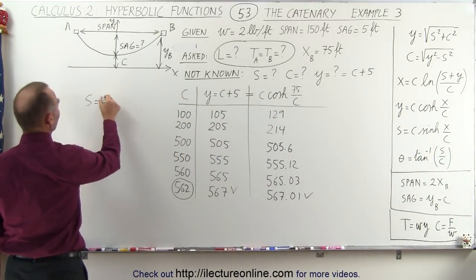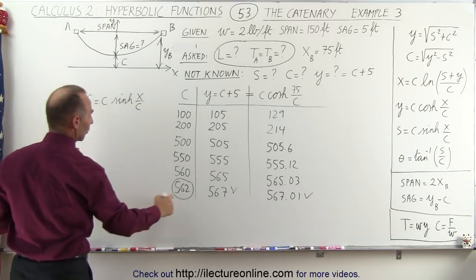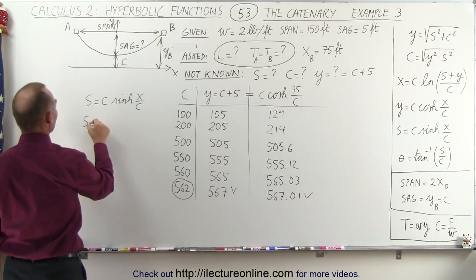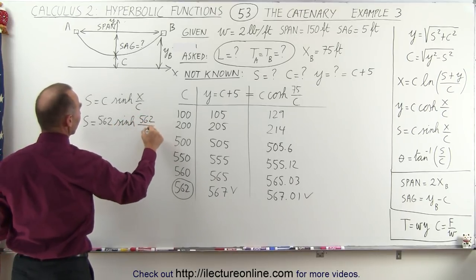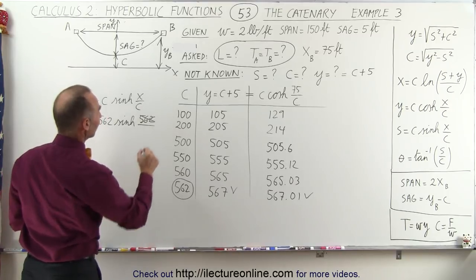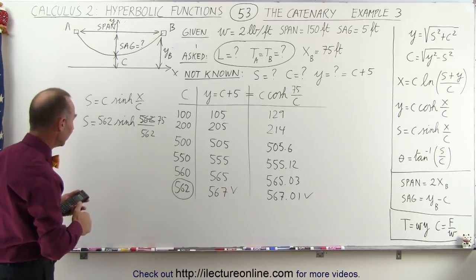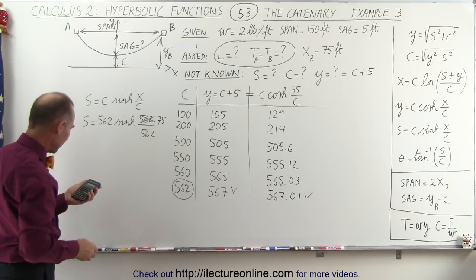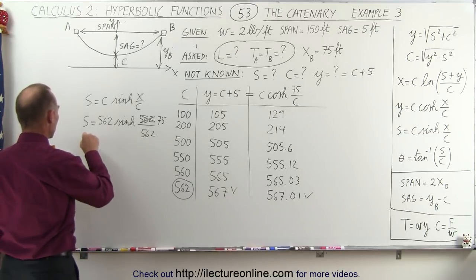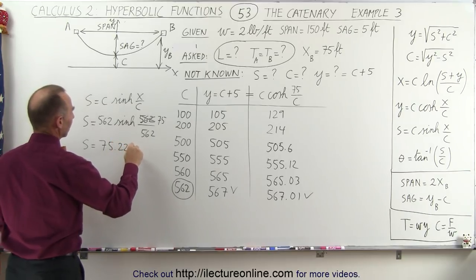So s is equal to c times the hyperbolic sine of x over c. And we're going to use this value for c. So s is equal to 562 times the hyperbolic sine of 75 divided by 562. All right. Let's see what we get for s. 75 divided by 562. Take the hyperbolic sine of that and times 562. And s is equal to 75.22 feet.